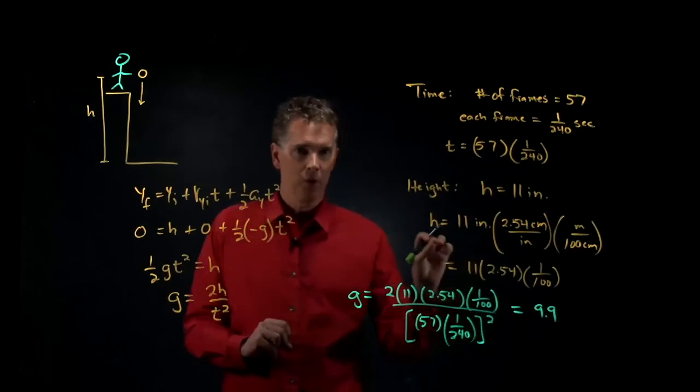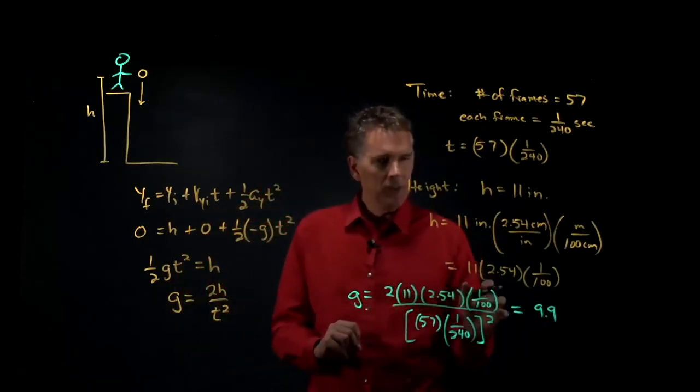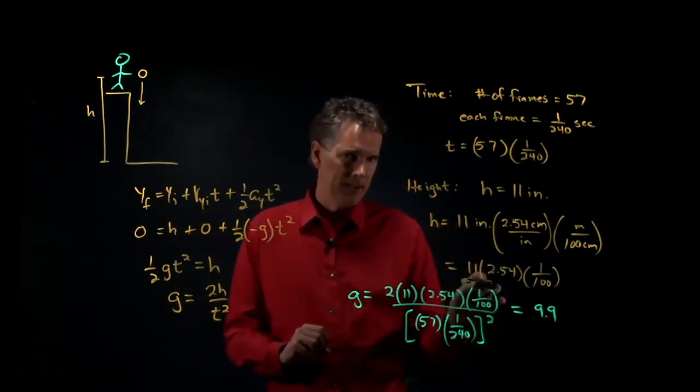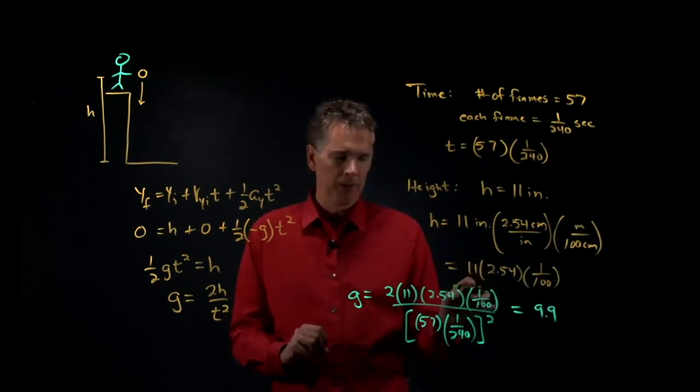We're about 1% off, which is pretty good. But you can do something else here. You can also calculate your error bars. How do you do it?